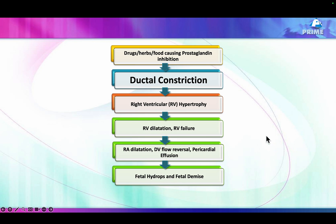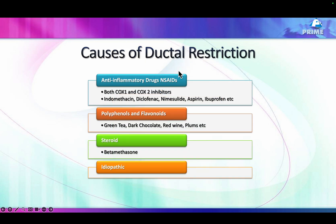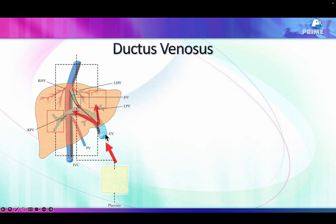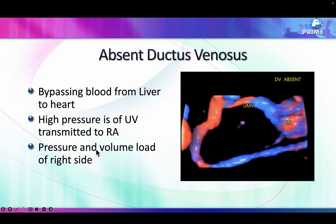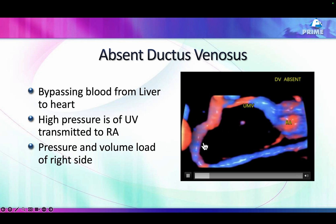Ductal arteriosus constriction can lead to a lot of problems, including fetal demise, because it is the only outlet of the right ventricle. Causes of ductal restriction include anti-inflammatory drugs, polyphenols, steroids, and idiopathic causes. Ductal restriction is something adult cardiologists should know about. The ductus venosus damps the large pressure from the umbilical vein and delivers it to the left atrium. If it is absent or joins directly into the right atrium, pressures are not reduced and blood goes to the right atrium instead of the left — and this patient shows the umbilical vein opening directly into the right atrium on power Doppler.